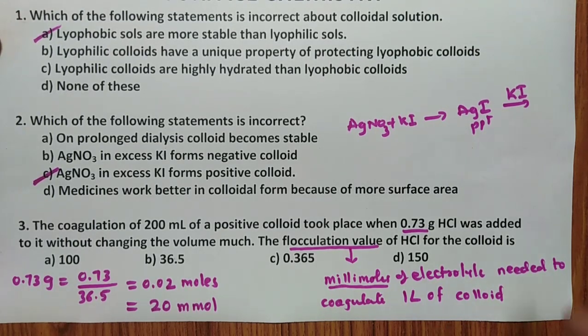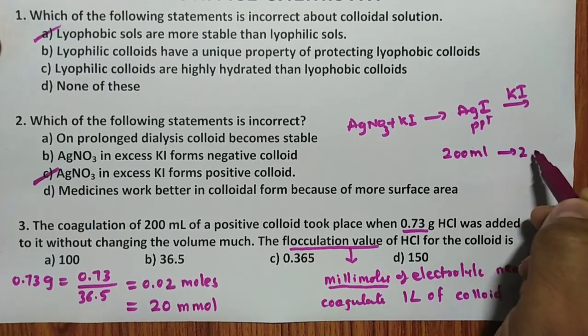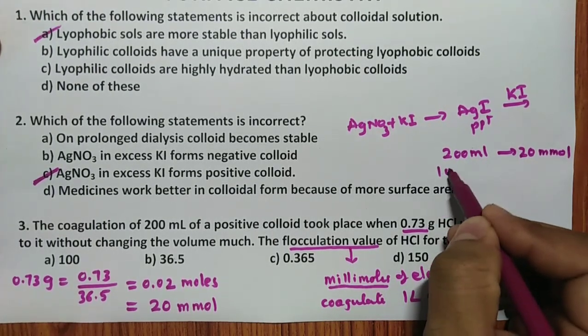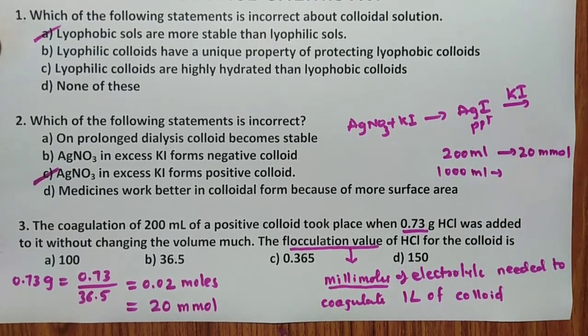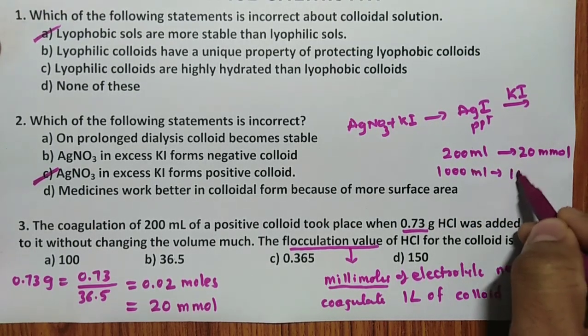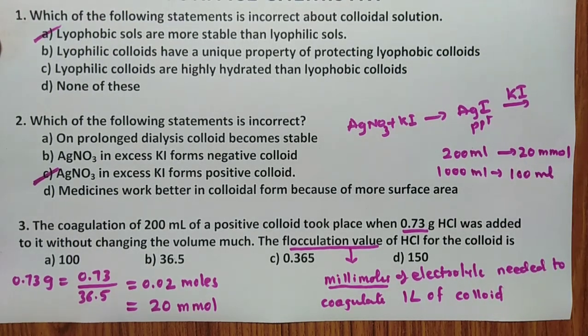So for one liter, you have to calculate. For 200 ml, 20 millimoles is required. For 1000 ml, that is one liter, how many millimoles is required? Very simple answer, you will get it as 20 into 1000 divided by 200, definitely you are going to get the answer as 100. So the answer for this question is A.